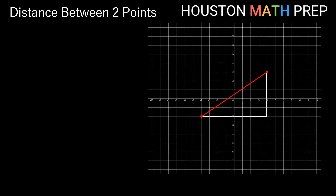We'll go ahead and label the sides of our right triangle like we're used to when we see right triangles: a, b, and c, where c is our longest side, our distance, or what we call our hypotenuse. So if you've seen the Pythagorean theorem before, we've probably heard that a squared plus b squared equals c squared, and we're trying to find this c here.